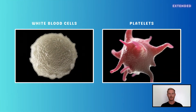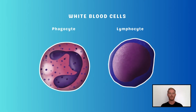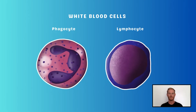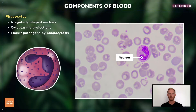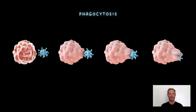For extended, you need to know a little bit more about white blood cells and platelets. The two most numerous types of white blood cells are phagocytes and lymphocytes. Phagocytes have an irregular kidney-shaped nucleus and a cytoplasm that extends outwards when ingesting foreign particles. They engulf, and sometimes digest, bacteria, cell debris, and other harmful substances by phagocytosis.